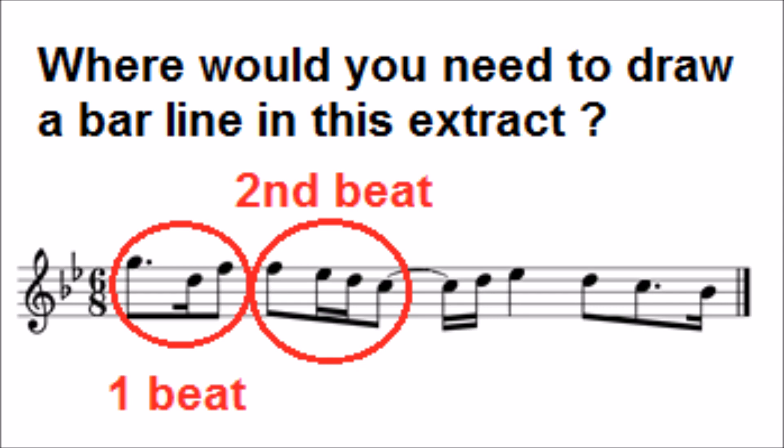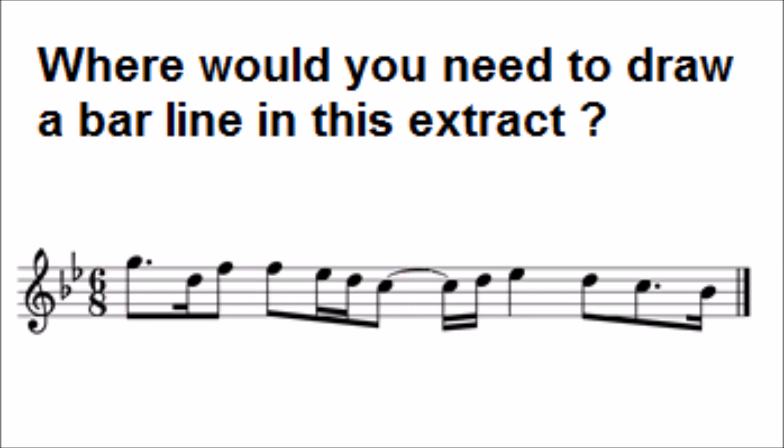But it is a lot easier to just see the beats by looking at the beams, because the beams usually join notes together that are in the same beat. Now, let's remember that in 6-8 time we have two beats of three quavers each. So the bar line will go between the two tied C's here.